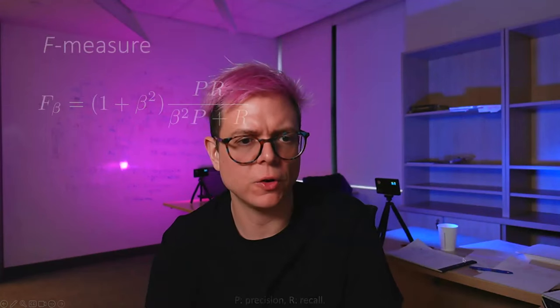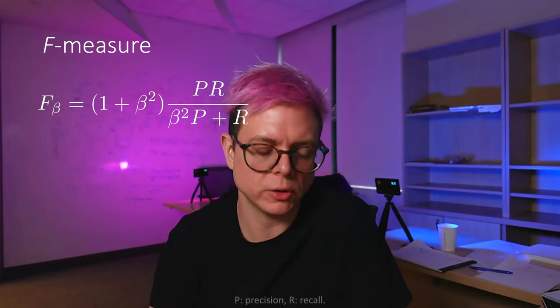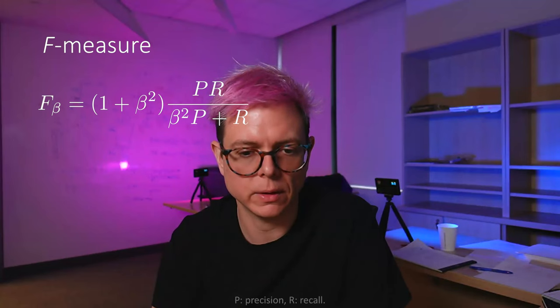Now we had these two terms, precision and recall — there is a way to put them together. The F-measure allows us to compute a trade-off between precision and recall. These three properties won't all be large simultaneously — it's a trade-off problem. If you try to get one high, the other one goes down. You have to decide where to put yourself based on the problem you have at hand. We can take the harmonic average, but you can also decide which one to weight more.